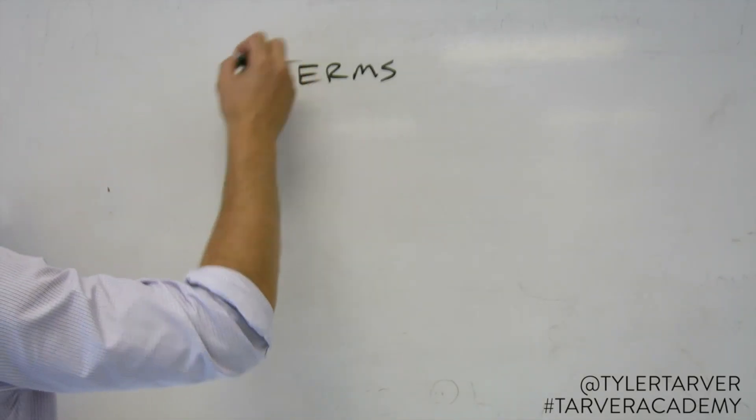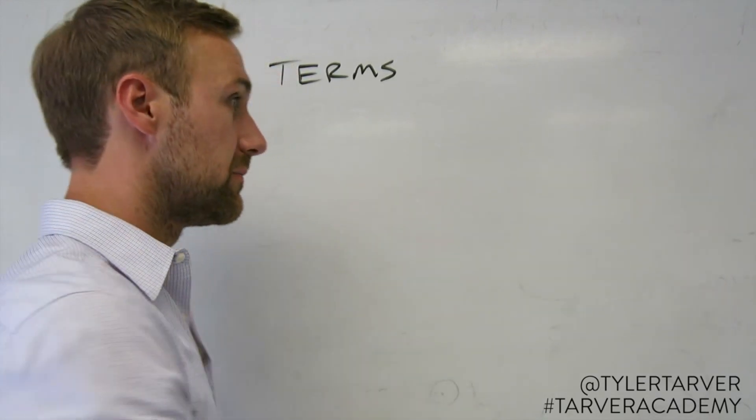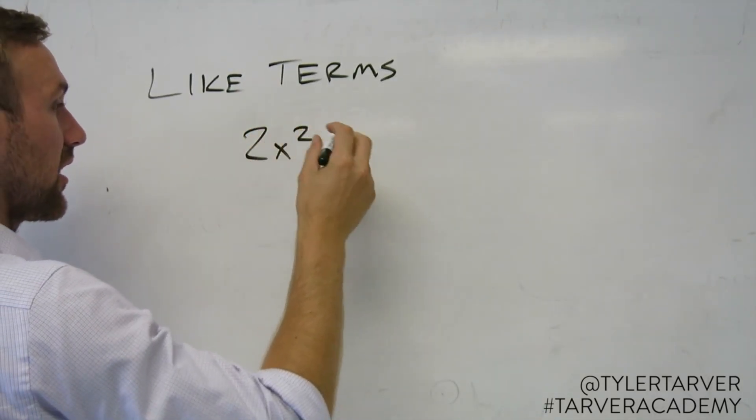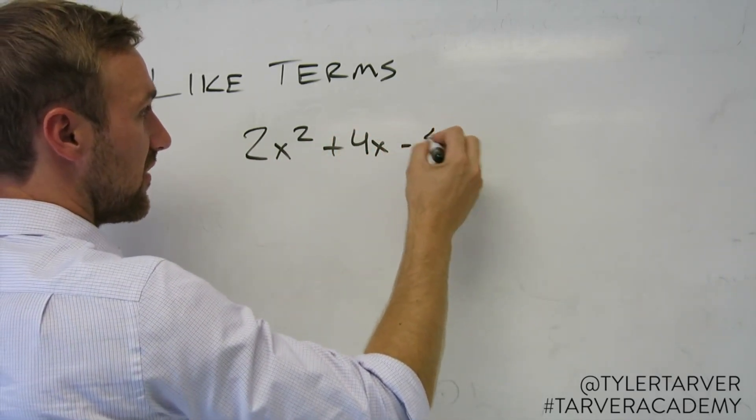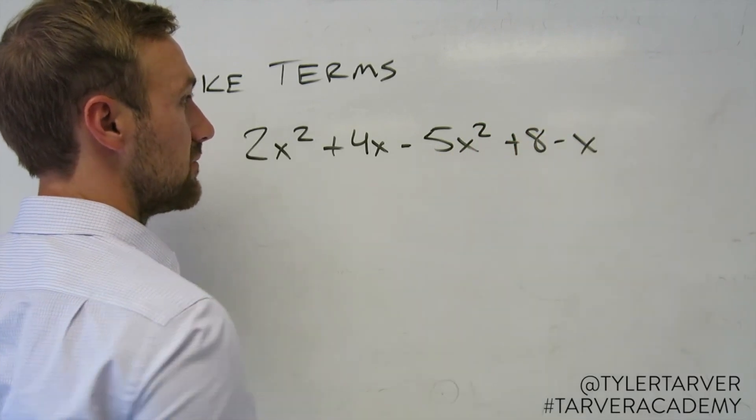Now, the thing I want to talk about now are called like terms. That means they are similar. So say you've got 2x squared plus 4x minus 5x squared plus 8 minus x.